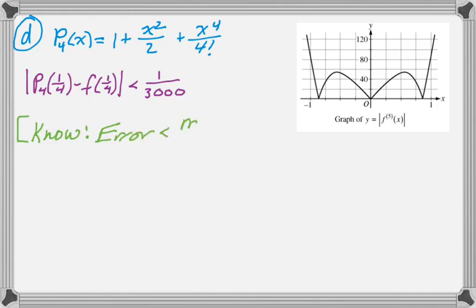So let's make sure that we all know the Lagrange error bound. So error is less than m, which is the mysterious part, times the absolute value of x minus a to the n plus 1. So x is where the polynomial is being evaluated, 1/4 in this case. A is the center, 0 in this case, and then over the quantity n plus 1 factorial.